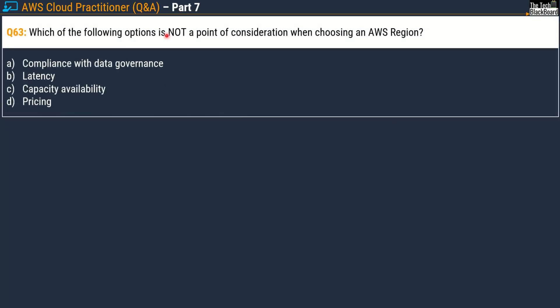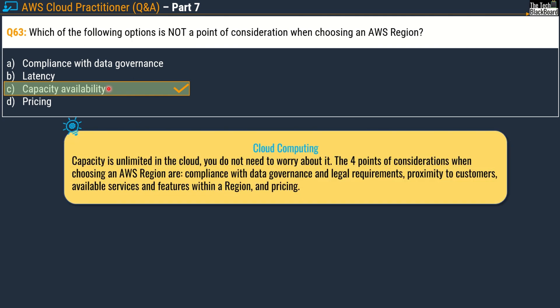Question 63 asks: which of the following is not a point of consideration when choosing an AWS region? Options are compliance with data governance, latency, capacity availability, and pricing. The correct answer is option C — capacity availability. Capacity is not a limitation in the cloud — it's unlimited. The four actual considerations when choosing an AWS region are: compliance with data governance and legal requirements, proximity to customers, available services and features within a region, and pricing.